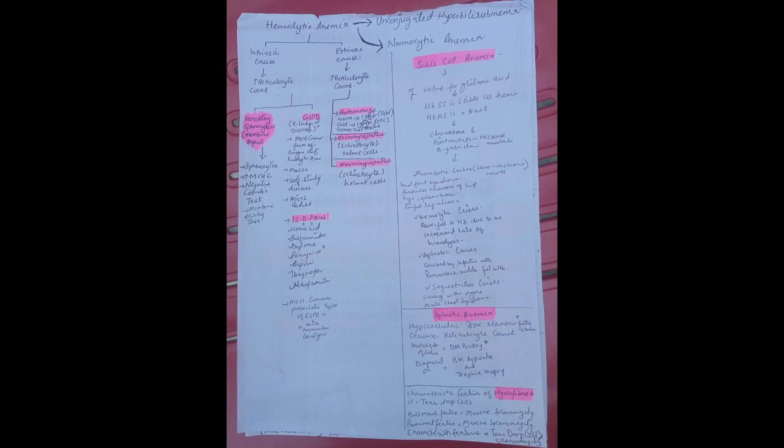If we talk about G6PD deficiency, it is an X-linked disease. There is the most common form of enzyme deficiency. Drugs that are responsible for G6PD deficiency can be remembered by the mnemonic IS D-PAIN.